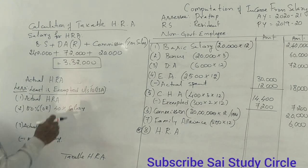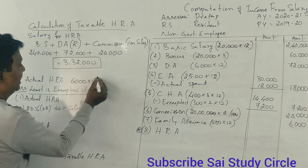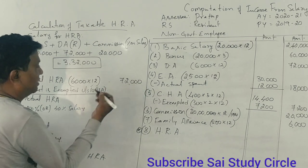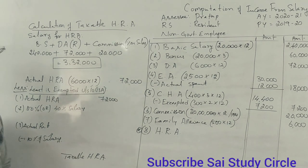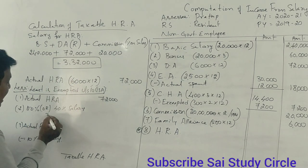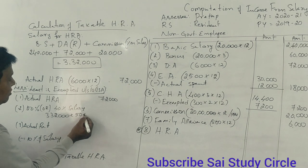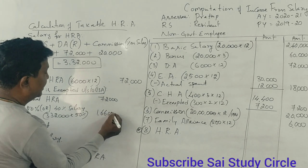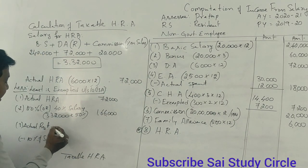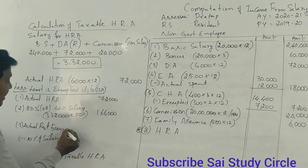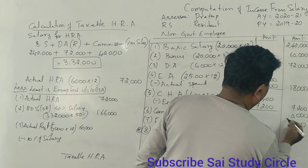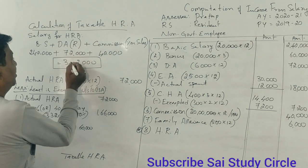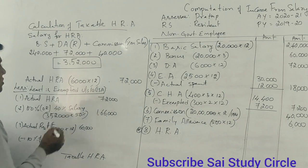Actual HRA received is Rs. 72,000. Since Mr. Pratap is in Delhi, the 50% limit applies. 50% of Rs. 3,32,000 is Rs. 1,66,000. Actual rent paid is Rs. 5,000 per month, i.e., Rs. 60,000 per year. Rent minus 10% of salary gives Rs. 60,000 minus Rs. 33,200 = Rs. 26,800. The least of the three amounts — Rs. 72,000, Rs. 1,66,000, and Rs. 26,800 — is Rs. 26,800, which is the exemption. Taxable HRA is Rs. 72,000 minus Rs. 26,800 = Rs. 45,200.